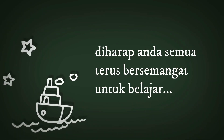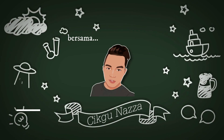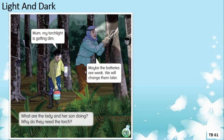First of all, let us look at this picture. You may find it in your science textbook page 61. Let's read this dialogue together. The boy says: 'Mom, my torch light is getting dim' — lampu suluhnya semakin malap. The mom replies: 'Maybe the batteries are weak' — mungkin baterinya sudah lemah — 'we will change them later' — kita akan tukar nanti.